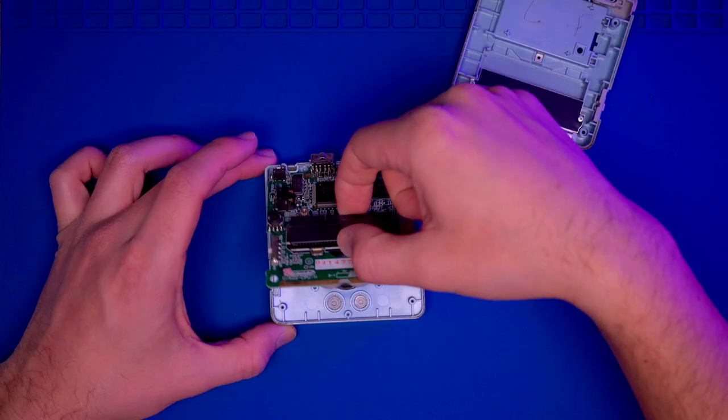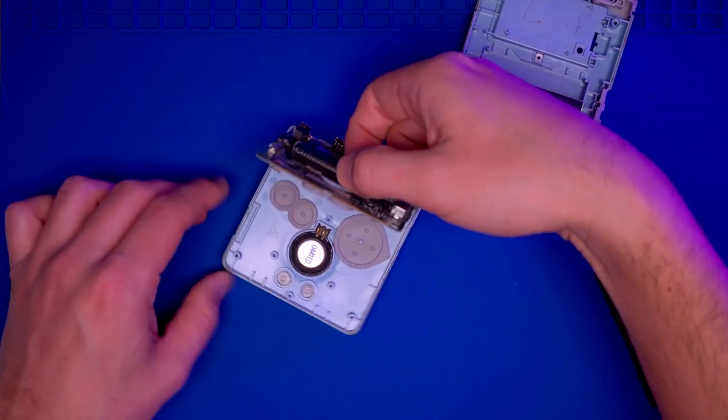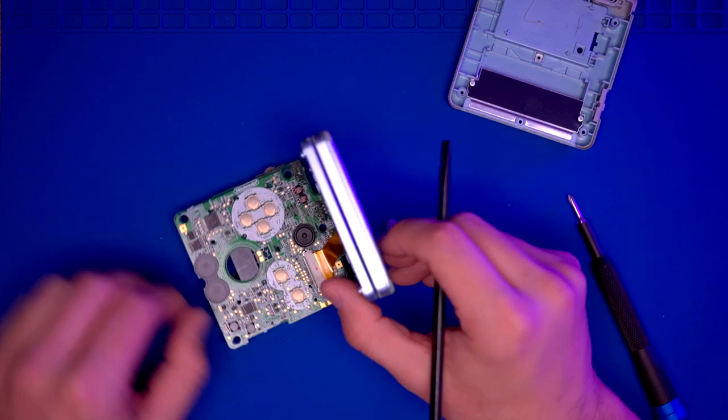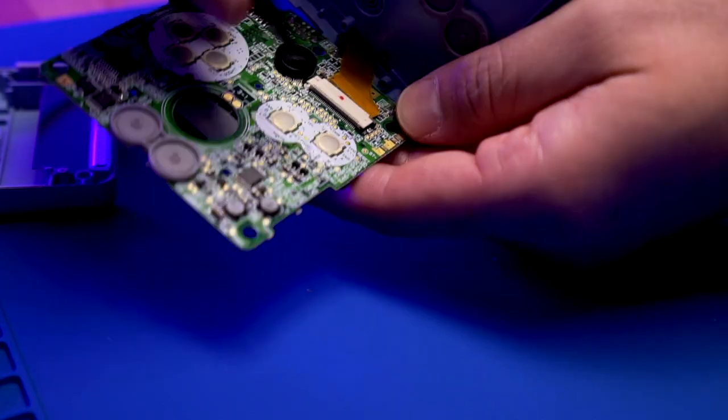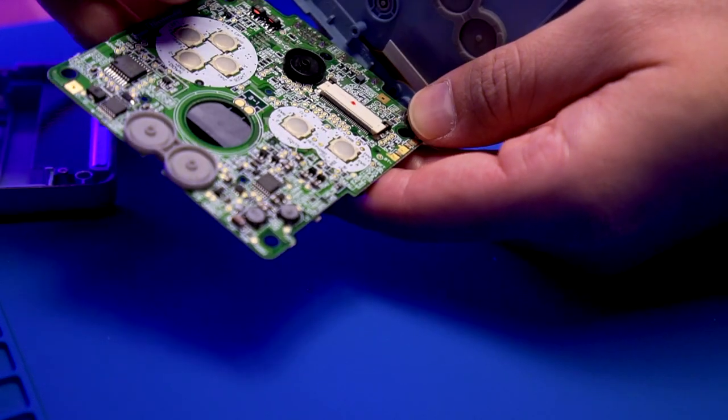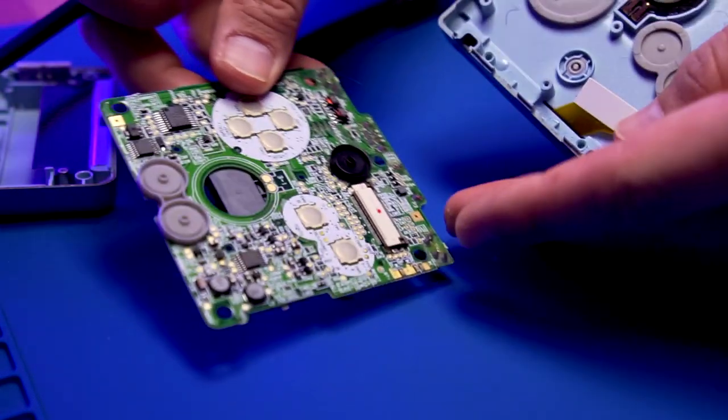The water damage indicator is also in pretty good condition. We're going to lift the PCB here, and be careful because we've got to detach the ribbon cable. Slide the tabs up and then remove the ribbon cable. Now we have our PCB.